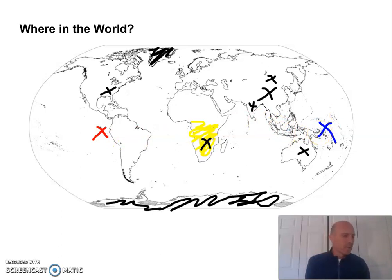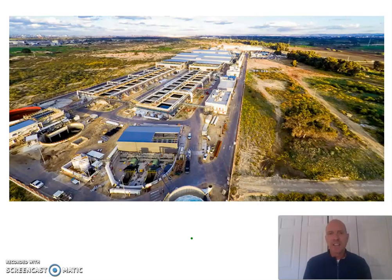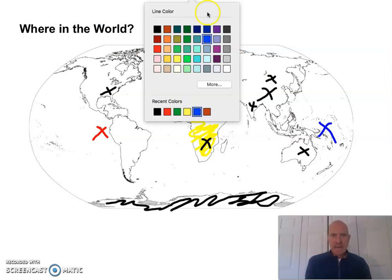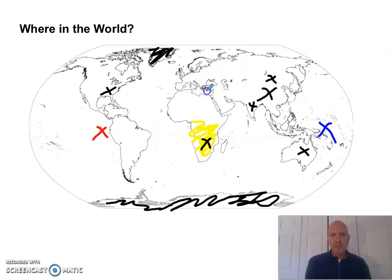Orange — places that historically have not had much fresh water but have lots of energy. They do desalination there. There's a pretty sophisticated desalination plant in Israel, and it's not just Israel — all the places in the Middle East region have lots of energy resources, not much fresh water, but lots of ocean water, so they desalinate.